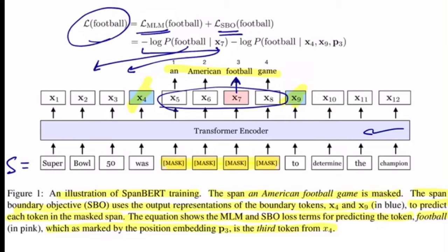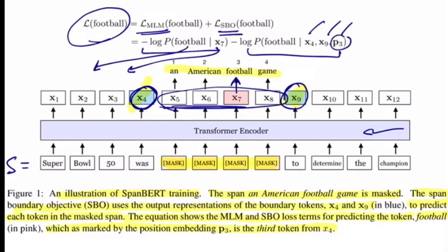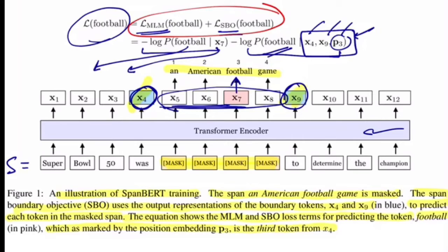The MLM loss is the negative log likelihood of predicting 'football' given X7's embedding learned via self-attention, mapped to the full vocabulary through a softmax. The SBO loss is conditioned on X4 (the start boundary embedding), X9 (the end boundary embedding), and P3 — the position of that token within the masked span. Since the span runs from X5 to X8, predicting X7 corresponds to position 3, hence P3.